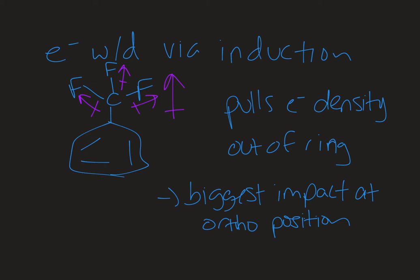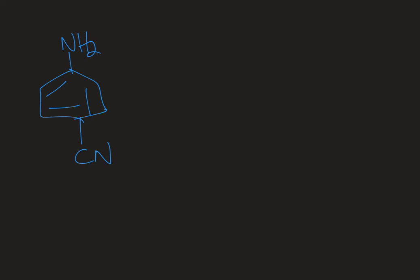Here is an example of a substituent that is electron withdrawing via induction. There's no pi system on that carbon and no way to pull electrons out of the ring onto that carbon — it's sp3 hybridized with four bonds already, so it can't accept any electrons. But it does pull electron density out of the ring via induction through that sigma framework. Those fluorines are pulling electron density away from the carbon, and that extends to neighbors as well, but this is definitely a proximity thing. So the ortho positions are going to be the most deshielded and have the biggest impact on chemical shift.